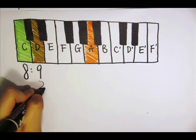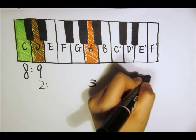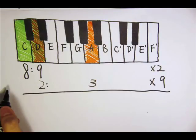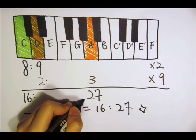Similarly, D to A is also a perfect fifth interval with a frequency ratio of 2 to 3. Since the frequency ratio of C to D is 8 to 9, we can calculate that the frequency ratio of C to A is 16 to 27.